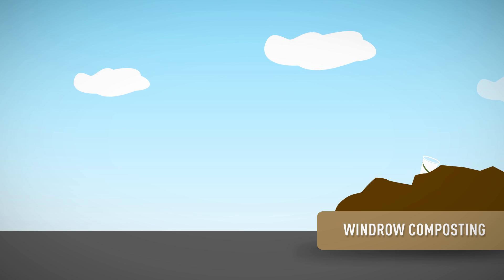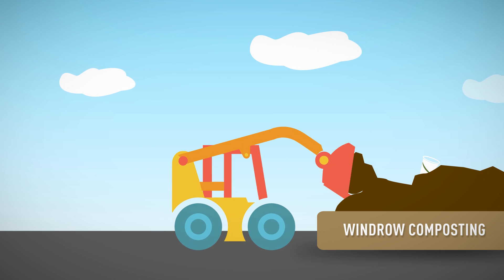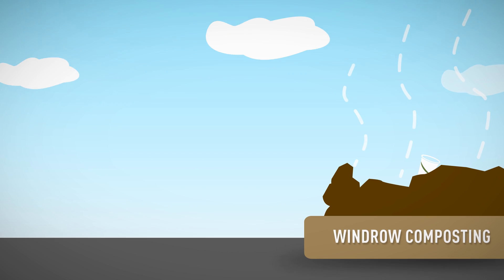Windrow style composting consists of long piles in which the feedstock is turned by machines to promote aeration.